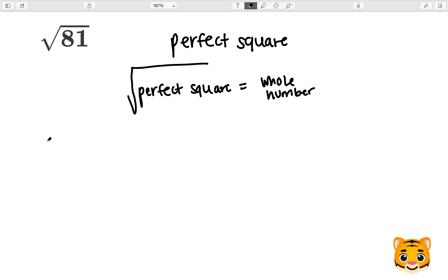Some examples of perfect squares are 2 squared which is 4, 5 squared which is 25, and 7 squared which is 49.